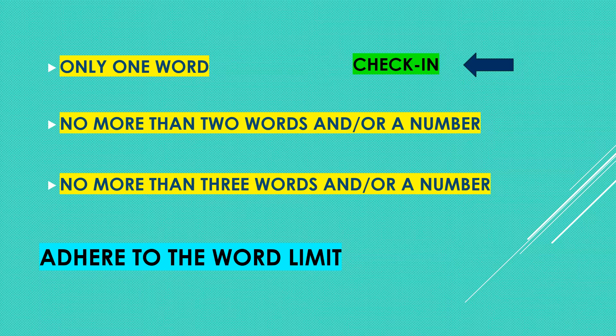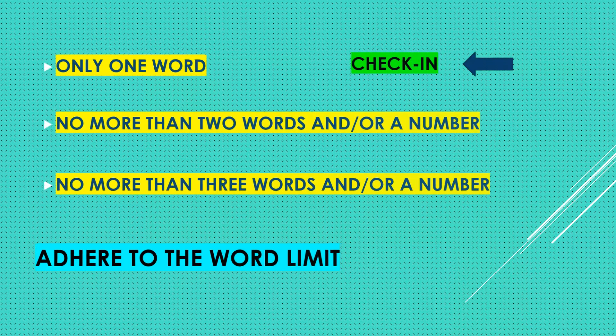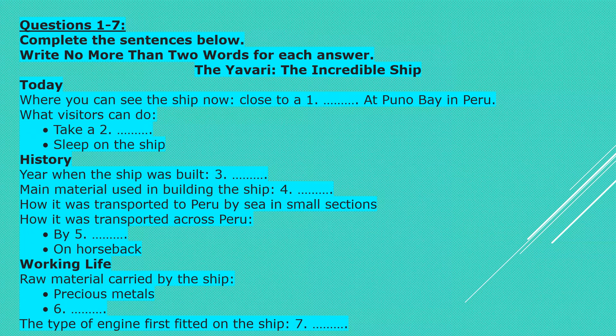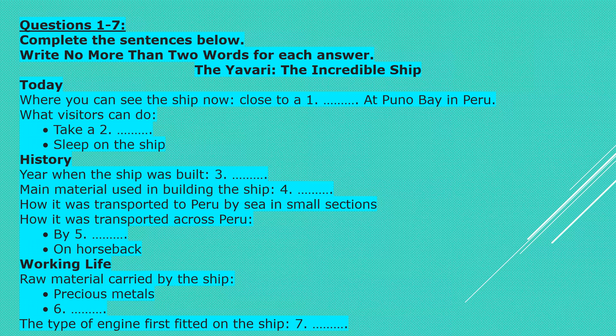We are now ready with the practice. Let's take a look at a table — you will hear a recording, and based on the recording, you have to answer questions marked 1 through 7. You will hear part of a talk about a ship called the Yawari. Look at the task, then listen and answer questions 1 to 7.